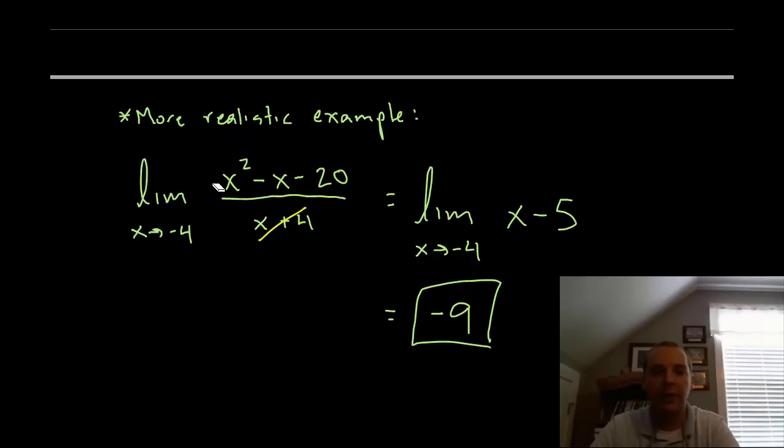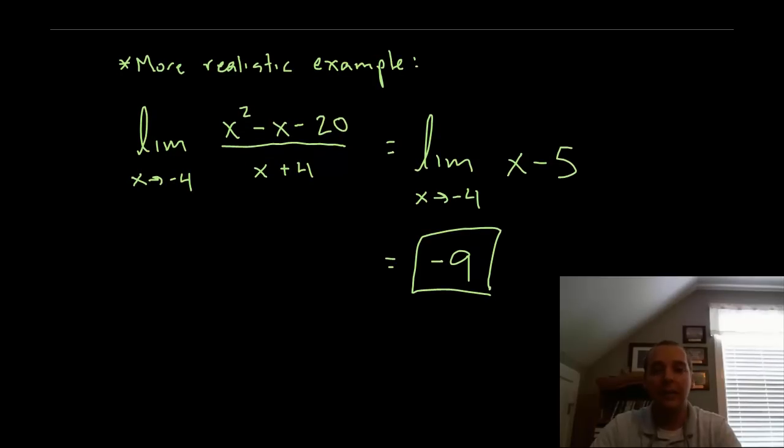Since this limit is negative 9, the limit for the original problem is also negative 9. This limit is also negative 9 because I simplified it, I cancelled some things, and that's how you evaluate these limits analytically which is just using algebra. Notice no tables, no graphs or nothing.